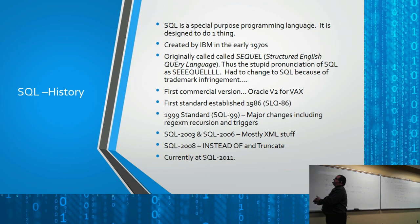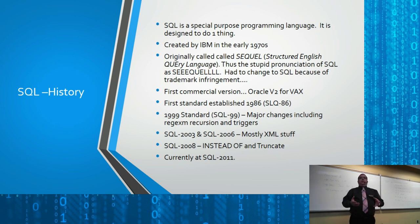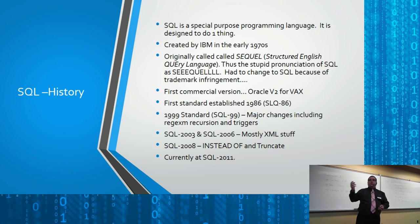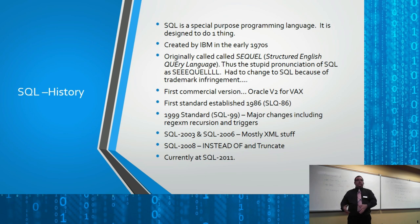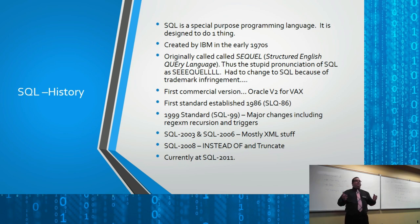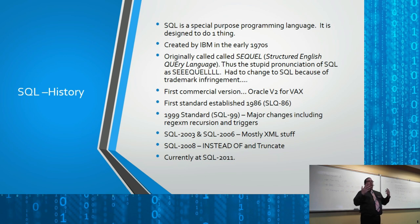SQL is a special-purpose programming language — it was designed to do one thing. A general-purpose language like Java, PHP, or C lets you write programs to do all kinds of things. A special-purpose language is created to do one thing and do it well. SQL was created to talk to databases. There's a language called R for doing statistics — it's a very math-intensive, specialty-purpose language. SQL is likewise a specialty-purpose language.